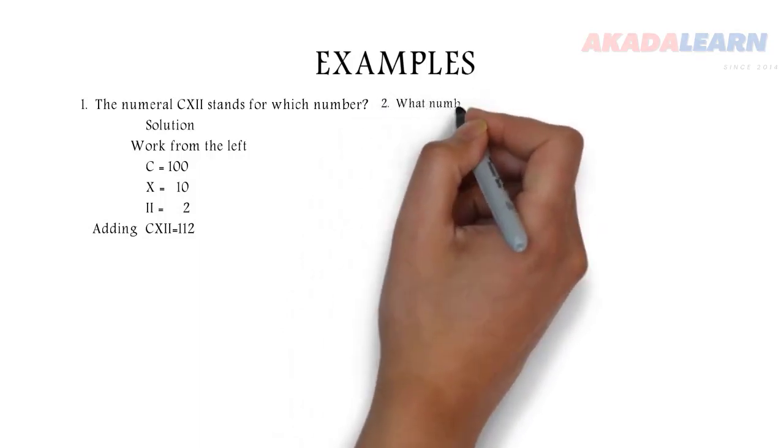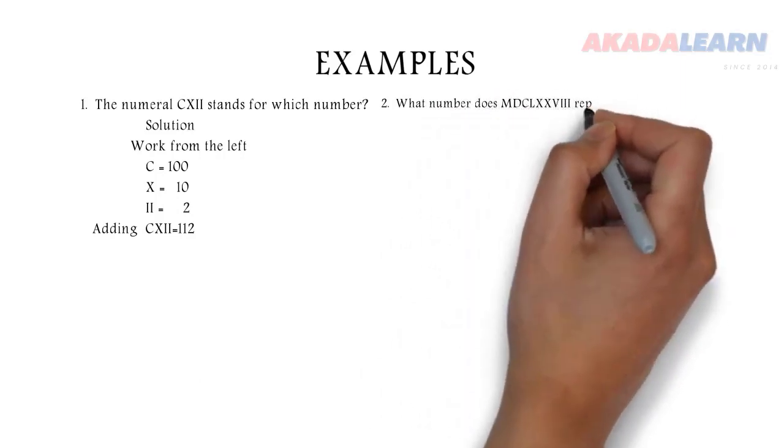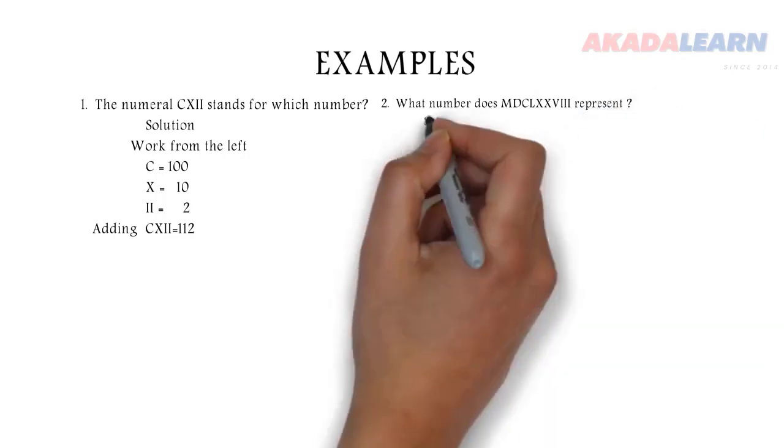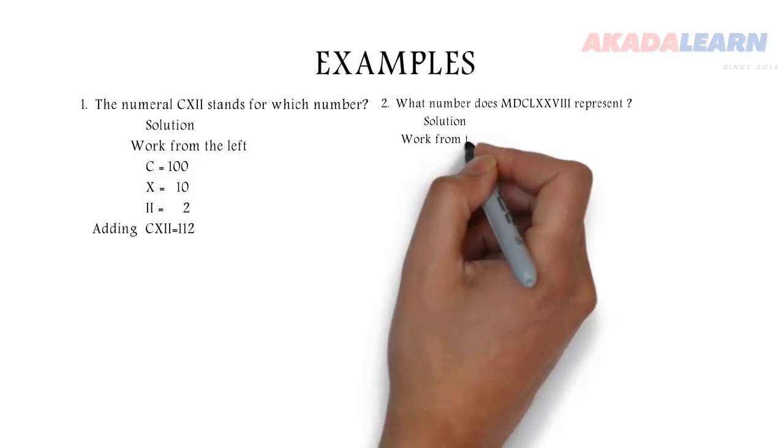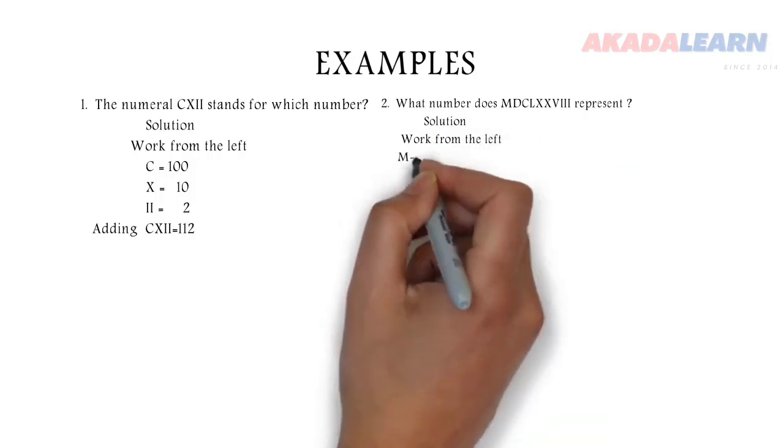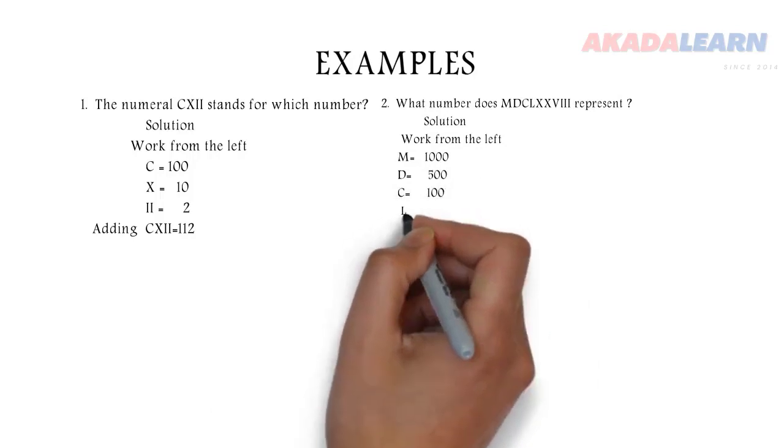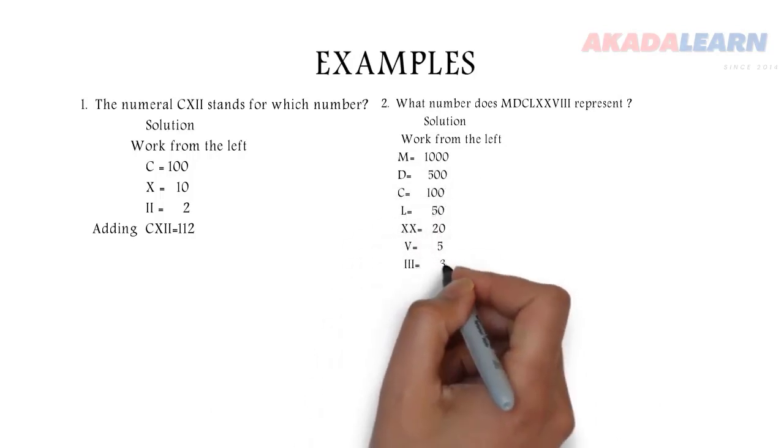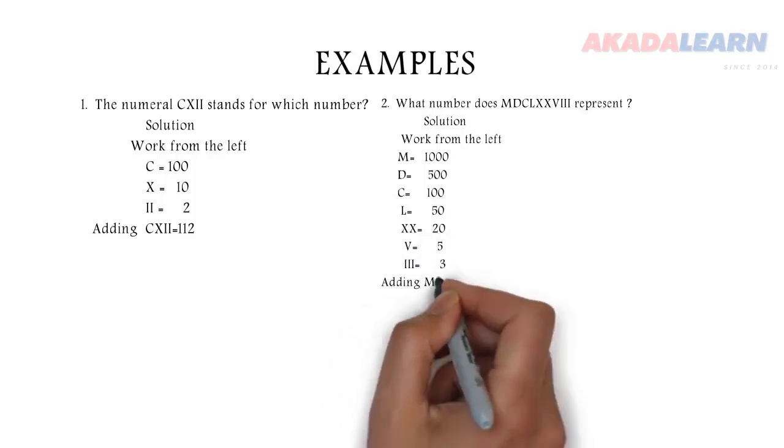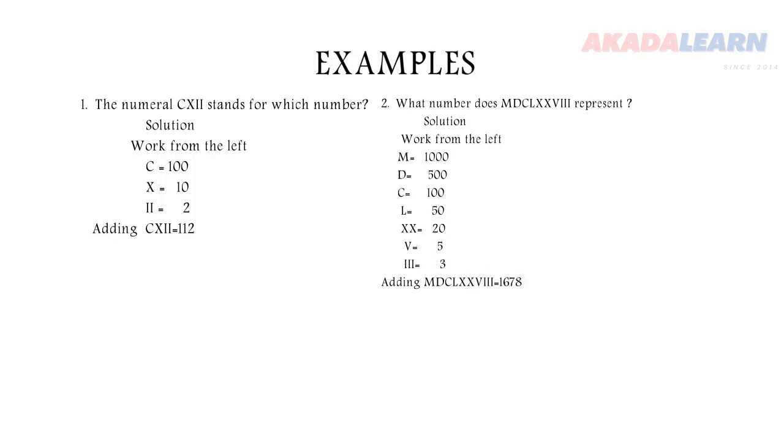The second question there says, what number does MDCLXXVIII represent? Solution, we also work from the left-hand side. Our M is 1000, D is 500, C is 100, L is 50, XX is 20, V is 5, and III is 3. And adding it up, we get our answer, which is 1678.